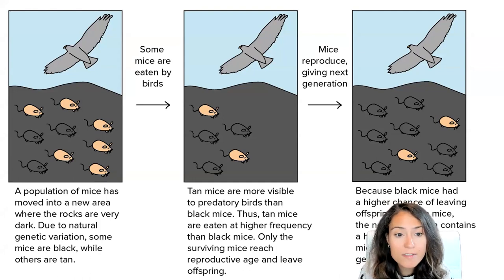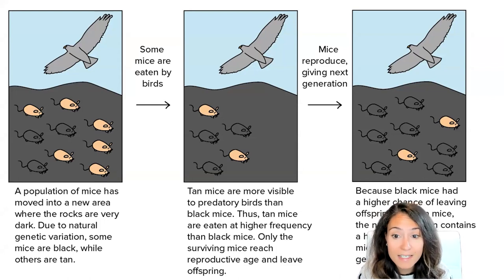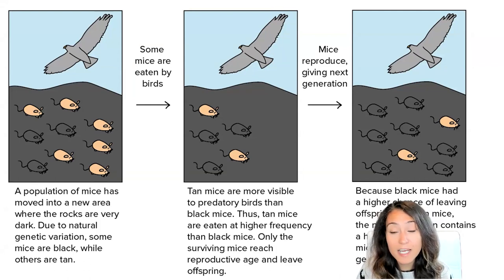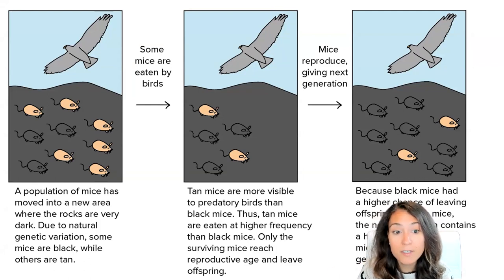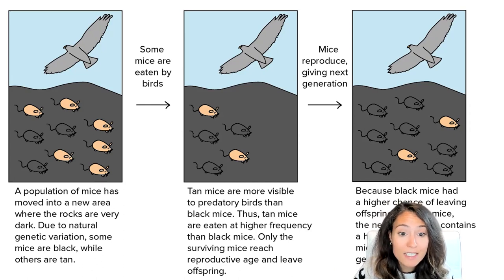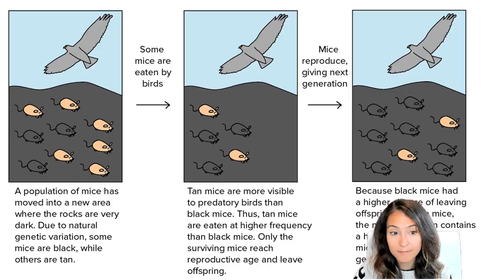Importantly, The Origin of Species introduced the idea that all organisms, including humans, are descended from a common ancestor, and set out a clear explanation for the Earth's evolving biological diversity. In constructing this theory about diversity, Darwin unwittingly provided a scientific rationale for social evolutionary theories.